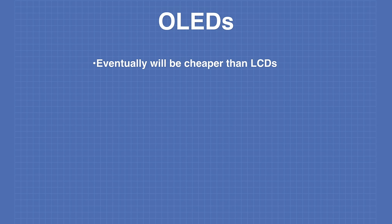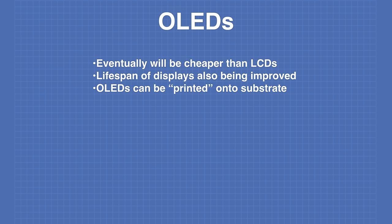Eventually OLEDs will become cheaper than LCDs as manufacturing techniques improve, and the lifespan of OLED displays is also being improved. OLED displays can be printed onto a substrate, and that brings up a number of unique possibilities — including the possibility of printing OLEDs on cloth to create clothing that can act as a video display. OLEDs are a lot of fun, so let's start using OLEDs in our Arduino projects now.